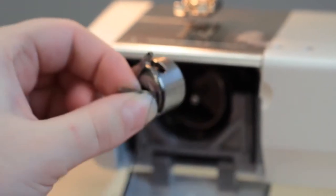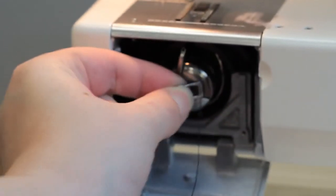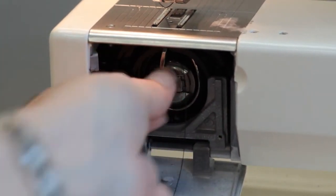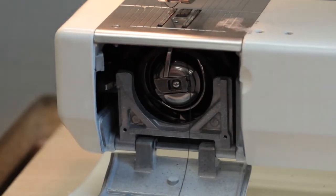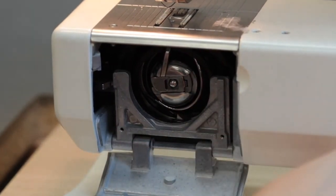Replace the bobbin case in the machine by lifting the arm and inserting the case into its place, making sure it clicks into place and stays there. Finish by closing the front panel of the machine.